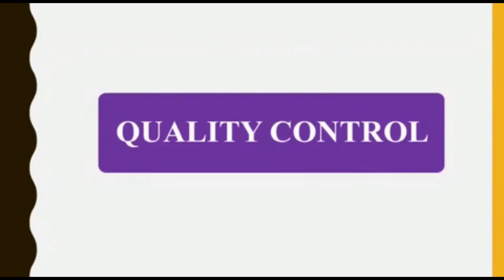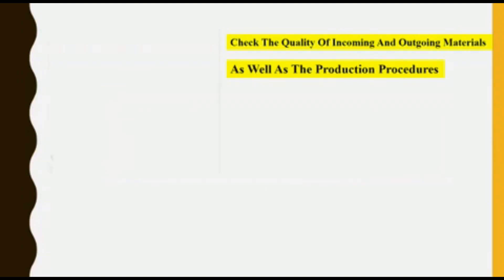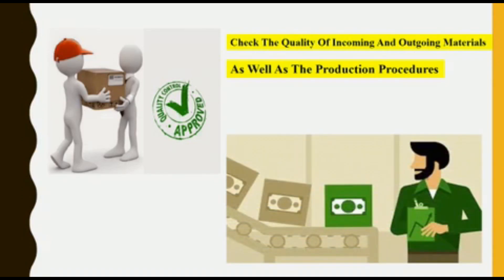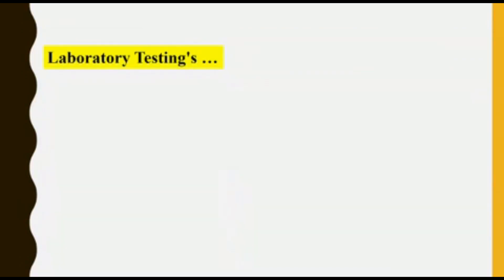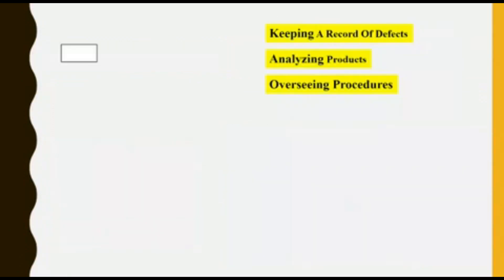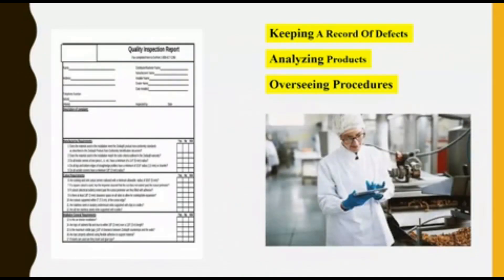Quality Control: A person working in Quality Control Department checks the quality of incoming, processed and semi-processed materials or products for a company, as well as ensures the compliance of production procedures. This job involves tasks such as running laboratory tests, keeping a record of defects, analyzing products, and overseeing procedures.